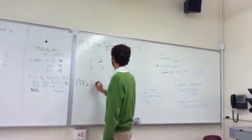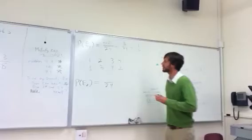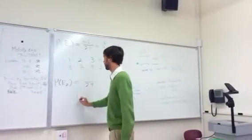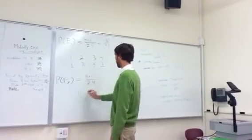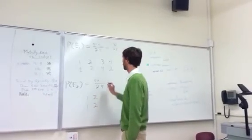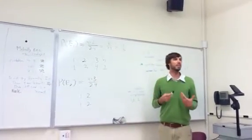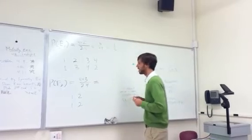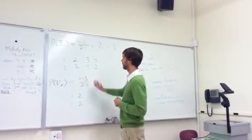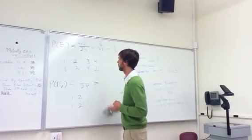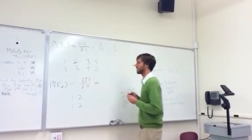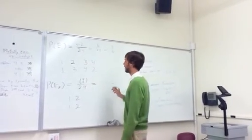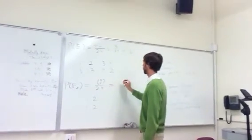Similarly, for E2, now we need to fix exactly two people to get their own card. Now, there's four people we can choose for the first person, and then there's three people we can choose for the second person. But then once we've specified the two people to get their own card, the other two people have to get each other's cards, and there's only one way for that to happen. But one problem here is that we've double counted. So instead of four times three, we should really use four choose two. And so arguing that one out, we end up with six over 24, which is one-fourth.